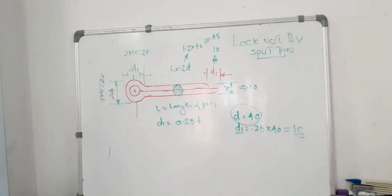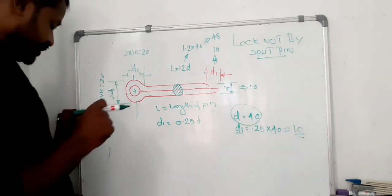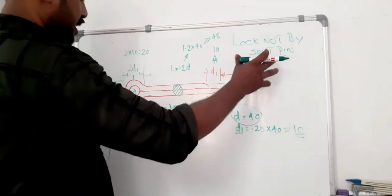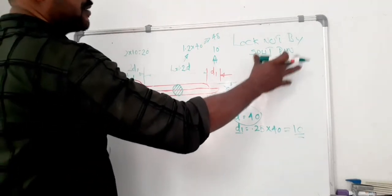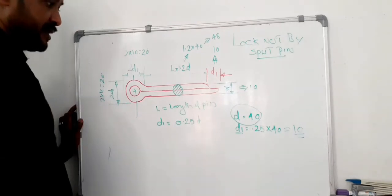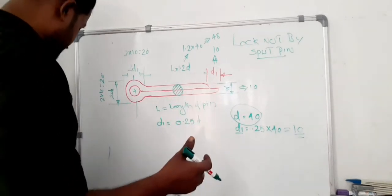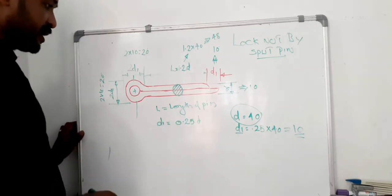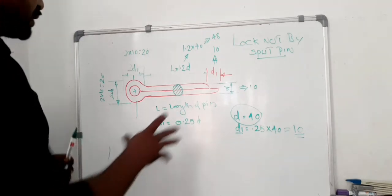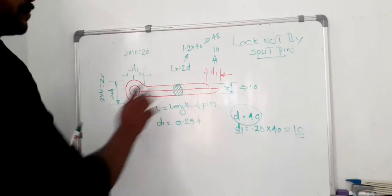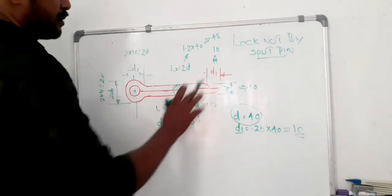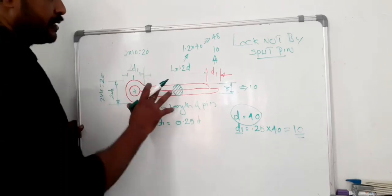Dear students, in this class we have to discuss another type of locking arrangement, that means locking arrangement by split pin. Before going in detail, first you have to understand what is the parameter, what is the shape of actual split pin. This figure shows the line diagram of a split pin and its parameter.